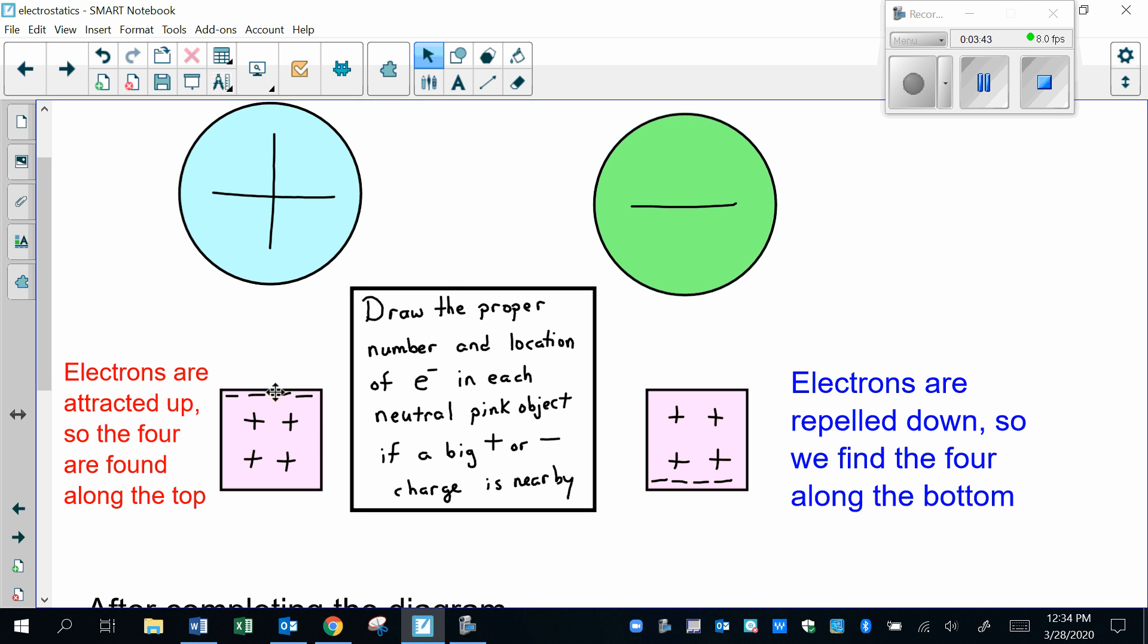In physics, we don't draw two force arrows. We just combine those two electric forces into one single attractive arrow. The same thing is happening here: the positives are closer to the negative—strong attraction. The negatives are a little bit farther away—a weaker repulsion. Overall, attraction.